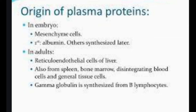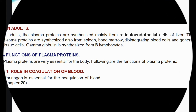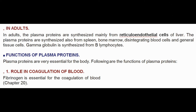Origin of plasma proteins: In embryo — During the embryonic stage, plasma proteins are synthesized by the mesenchyme cells; albumin is synthesized first and other proteins later. In adults — Plasma proteins are synthesized mainly from reticuloendothelial cells of the liver, and also from spleen, bone marrow, disintegrating blood cells, and general tissue cells. Gamma globulin is synthesized from B lymphocytes.